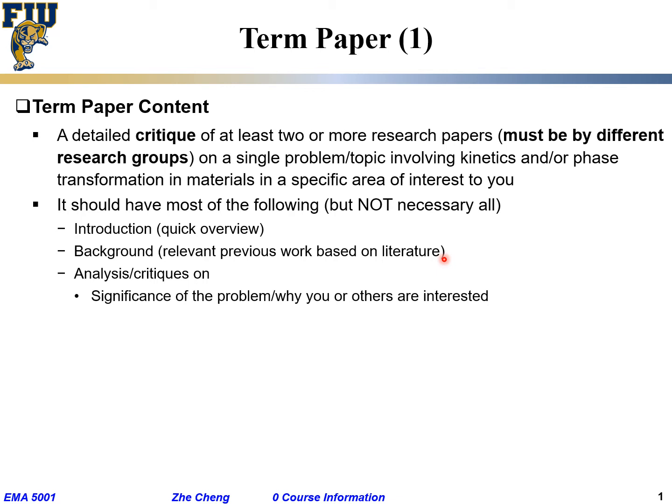And then your analysis or critique on many subjects. Significance of the problem: why would you or other people be interested in this particular problem? For example, with solar cell absorber material, silicon is expensive, so we study a cheaper system. Why is this problem important? And then, what is the method the authors use to study it? What are the assumptions before going into this problem?